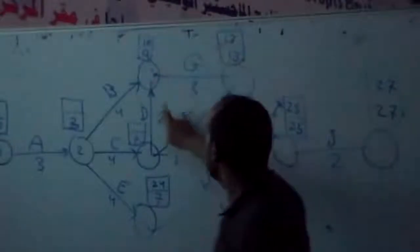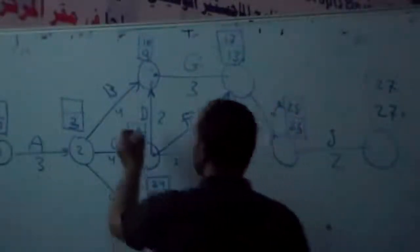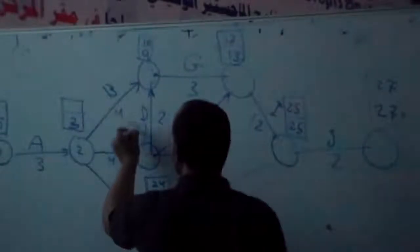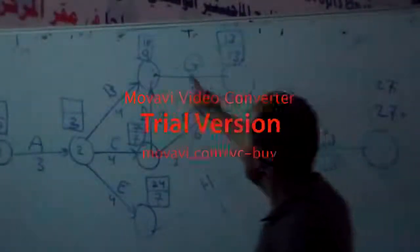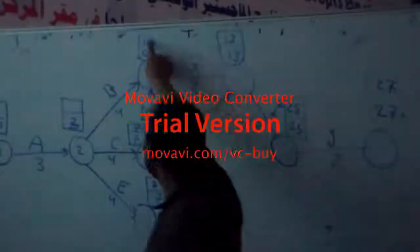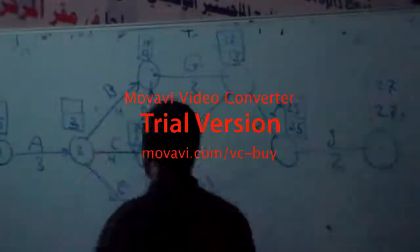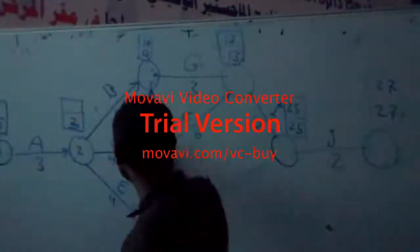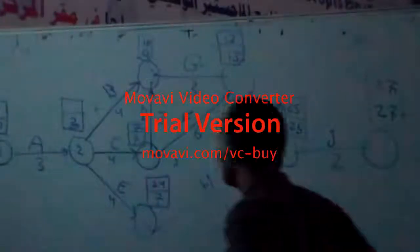There is no option from 10 here. 10 minus 2 is 8, and this is 7. We have to use the smallest — 7. Yes or no, then from here, 10 minus 4 is 6. And here, 7 minus 4 is 3.